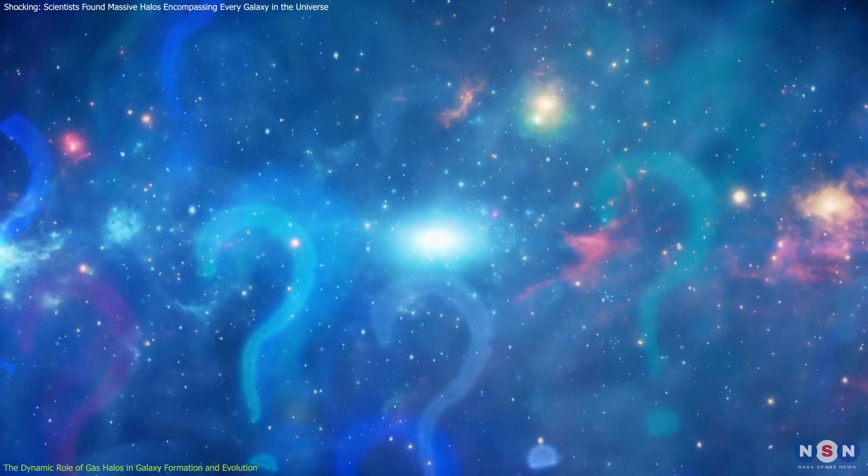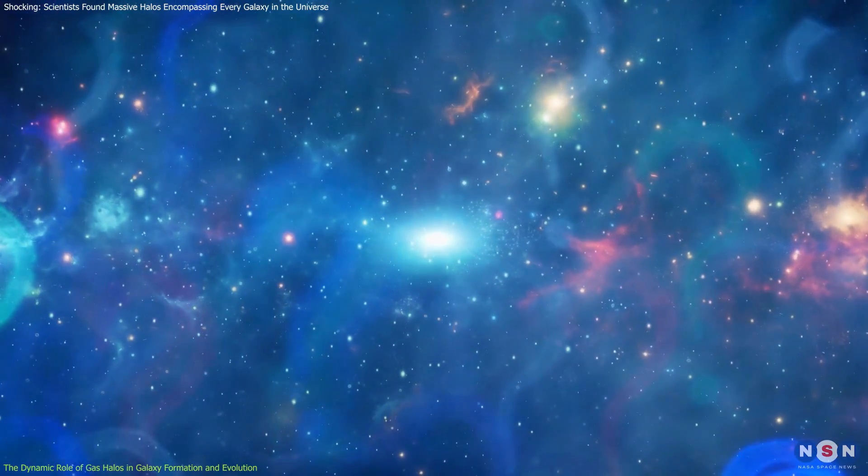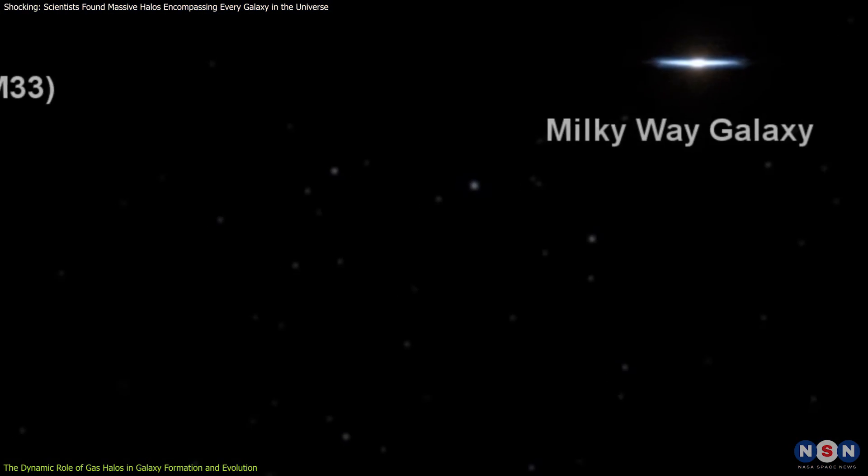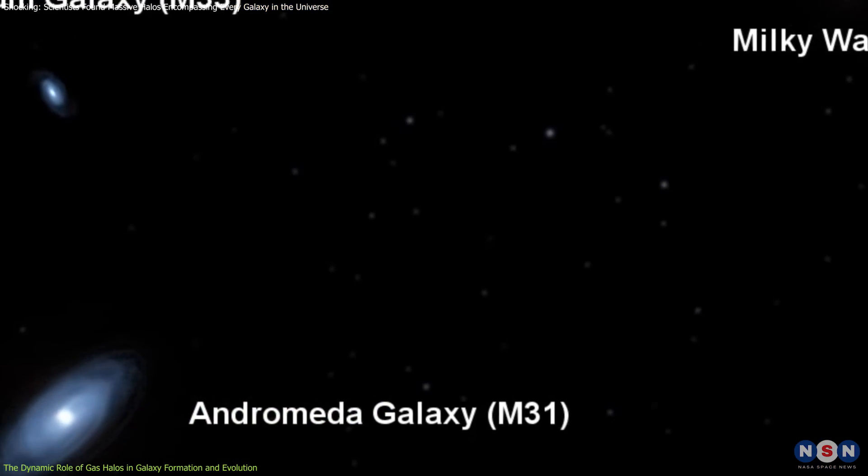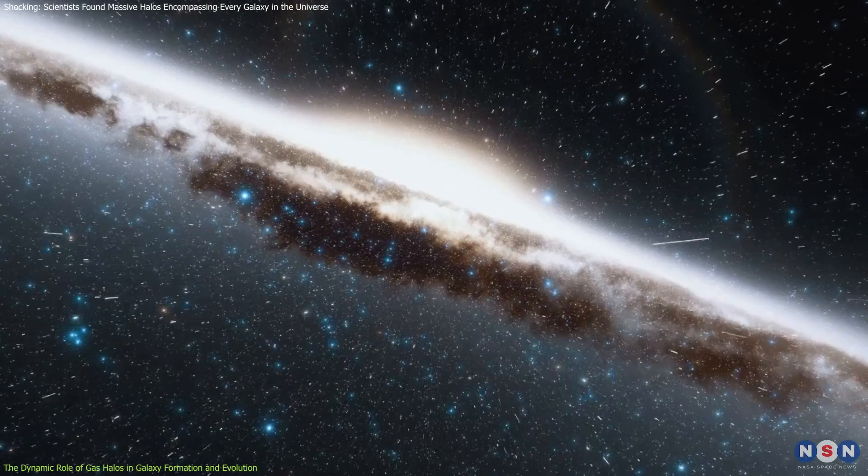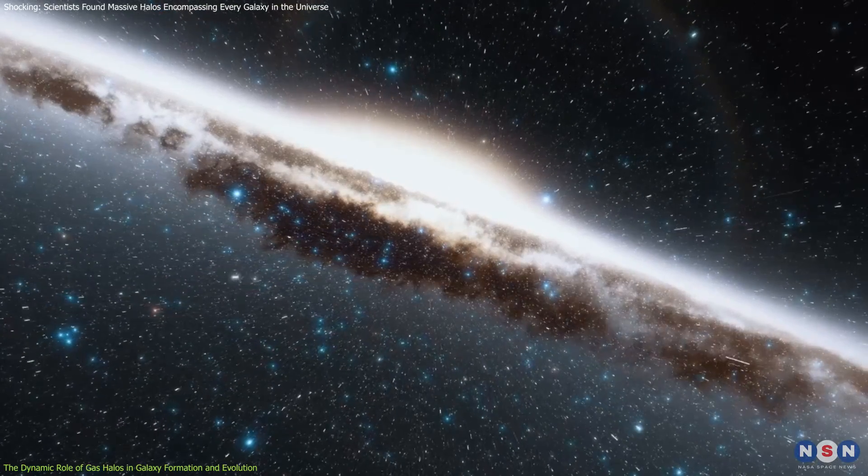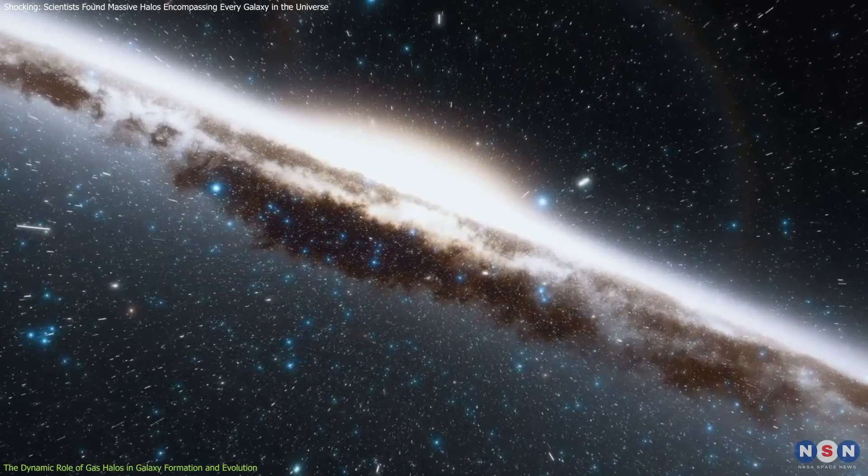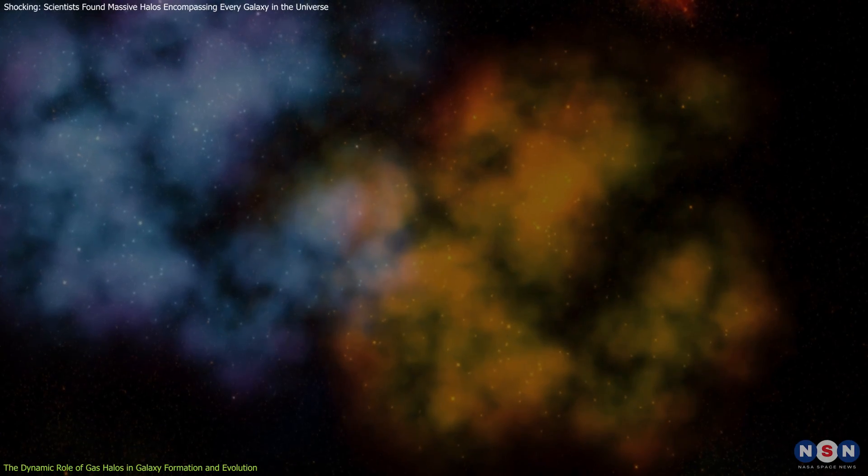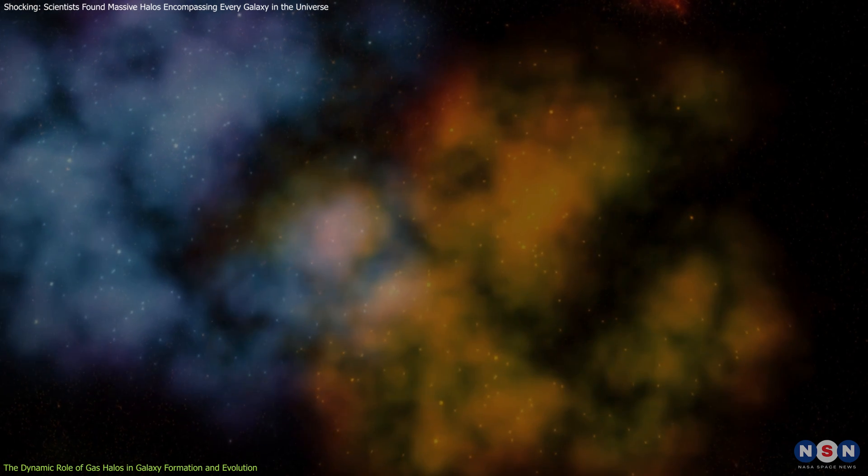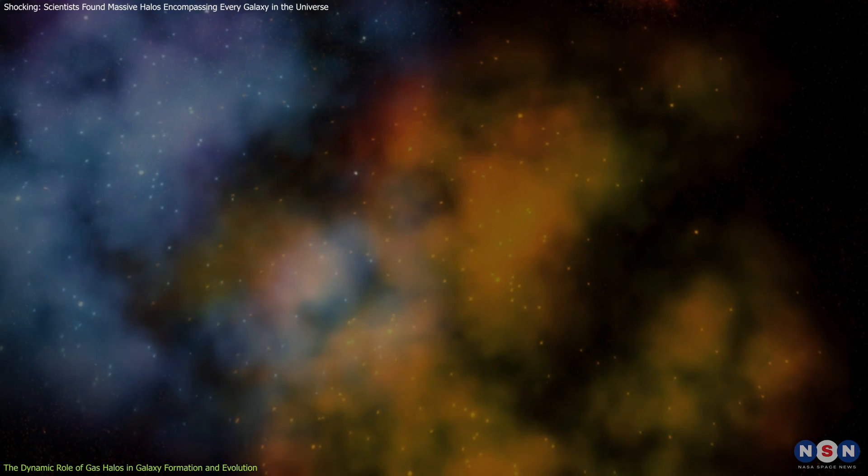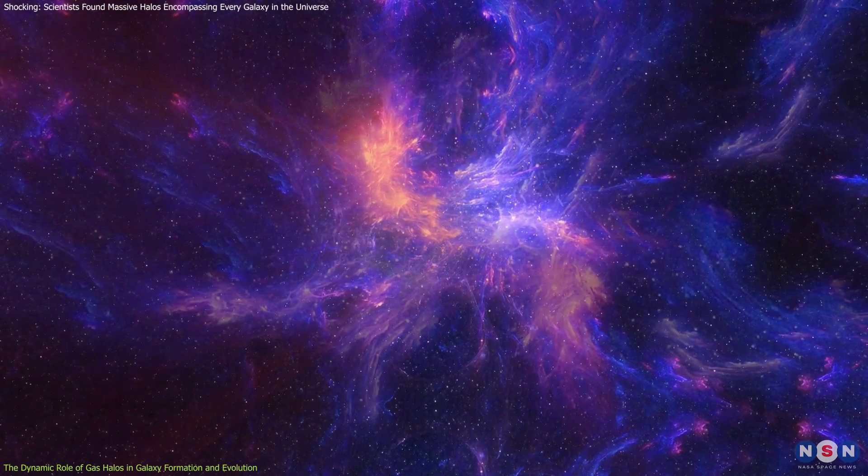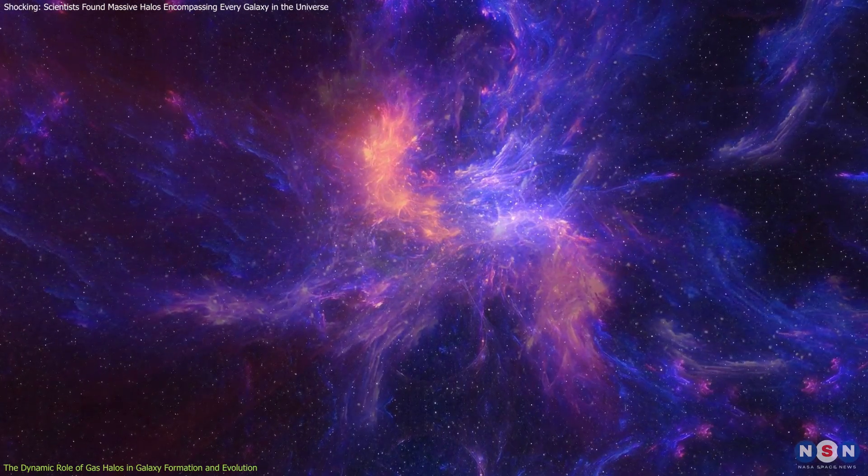This raises intriguing questions about the interactions between galactic halos, particularly those of the Milky Way and Andromeda. Given that the Milky Way's halo extends about 100,000 light years, it is likely already overlapping with Andromeda's halo. This potential overlap suggests that the circumgalactic mediums, CGMs, of these two galaxies are beginning to interact, revealing more complex intergalactic dynamics than previously understood.